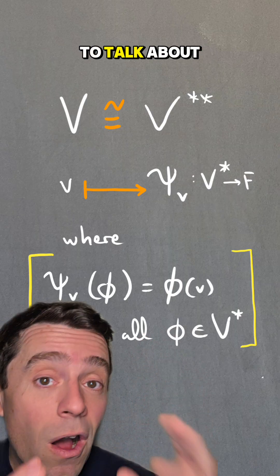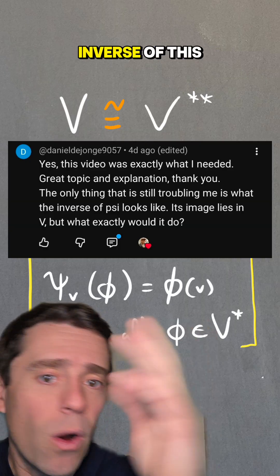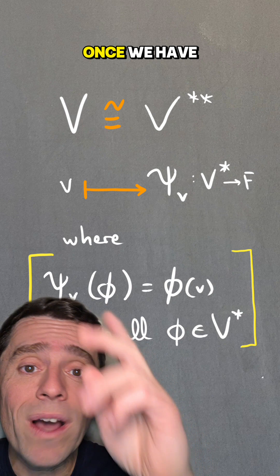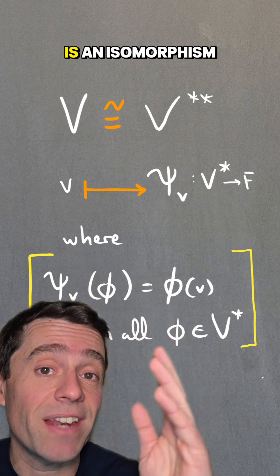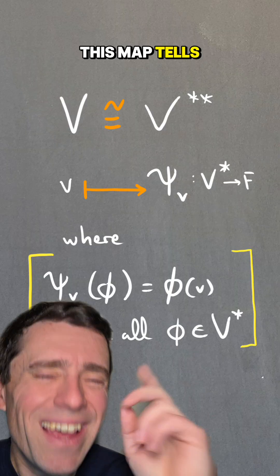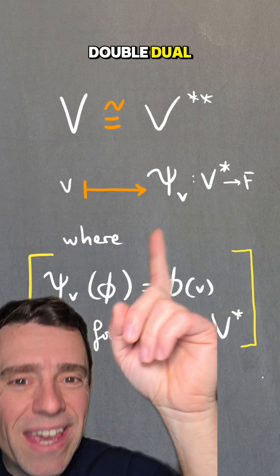Now, what I want to talk about in this video is the following question. Somebody asked me, what is the inverse of this map? And that is a great question. In fact, once we have proved that this is an isomorphism, the surjectivity tells me that every single element of the double dual is one of these.